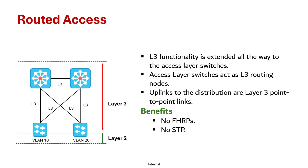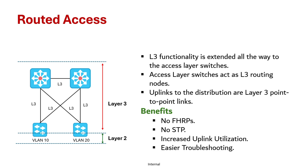Another advantage is that no Spanning Tree Protocol is required, since there are no Layer 2 loops, so STP is completely eliminated. Additionally, uplink utilization is increased — both uplinks between the access and distribution layer are fully utilized because, since you are using Layer 3 links, there is no blocking link, so both links will be used, which boosts effective bandwidth for connected devices.